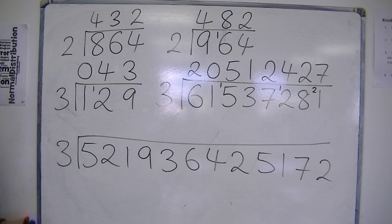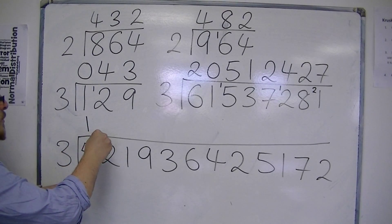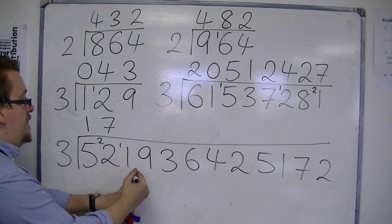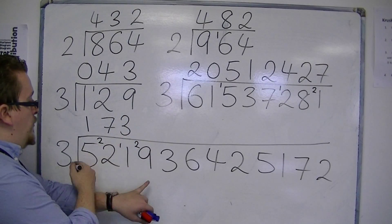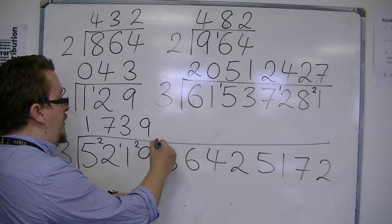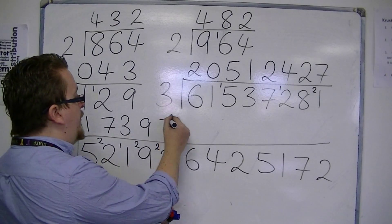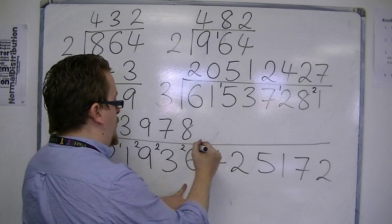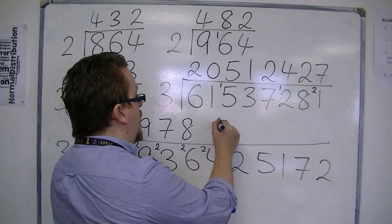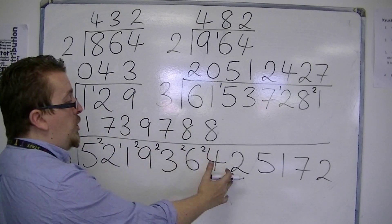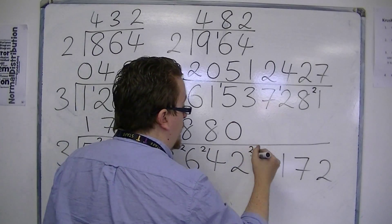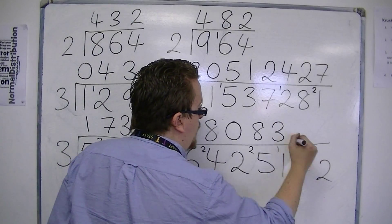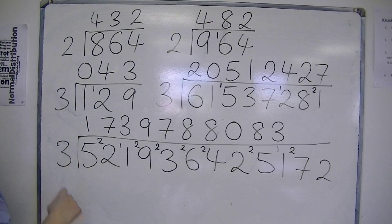Now I'm going to go through it. 3's into 5 go once with 2 left over. 3's into 22 go 7 with 1 left over. 3's into 11 go 3 with 2 left over. 3's into 29 go 9 with 2 left over. 3's into 23 go 7 with 2 left over. 3's into 26 go 8 with 2 left over. 3's into 24 go 8. 3's into 25 go 8 with 1 left over. 3's into 27 go 9.